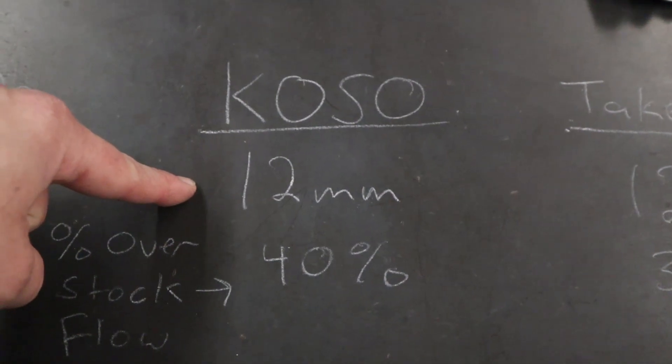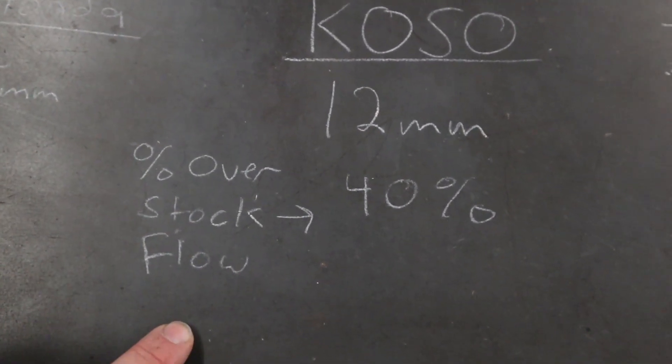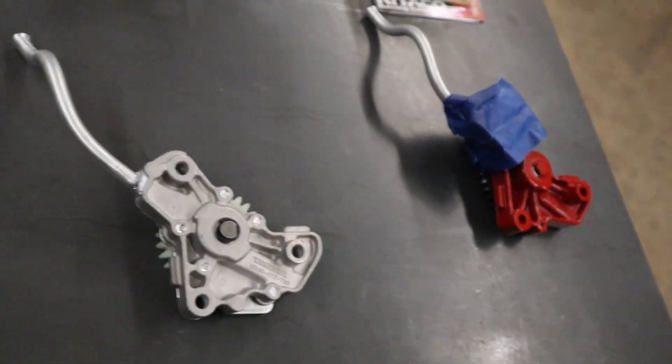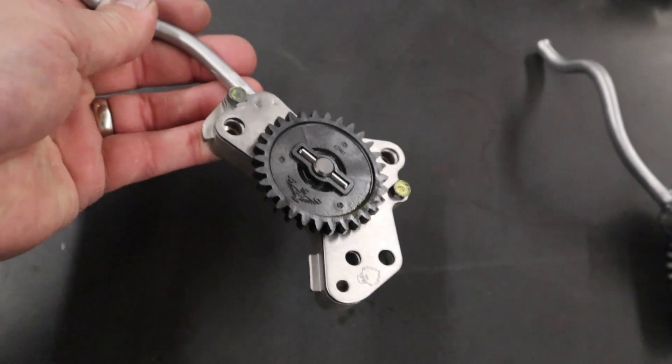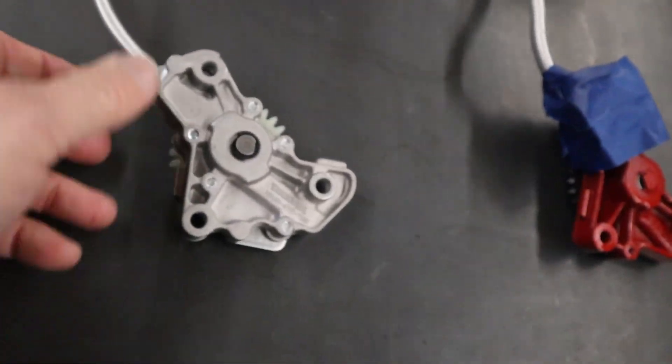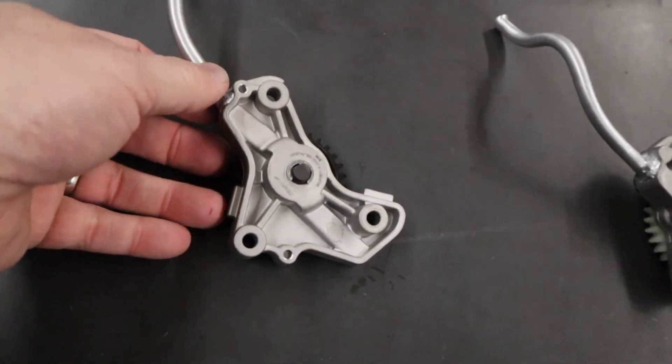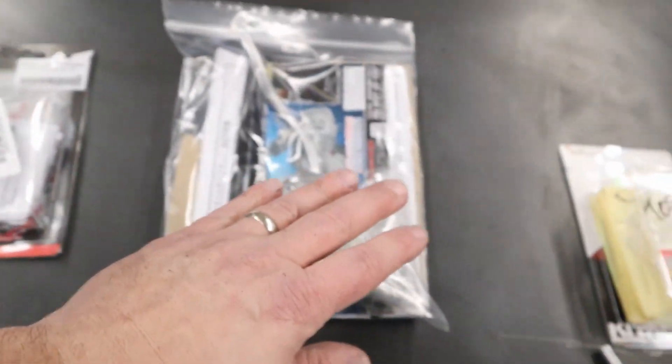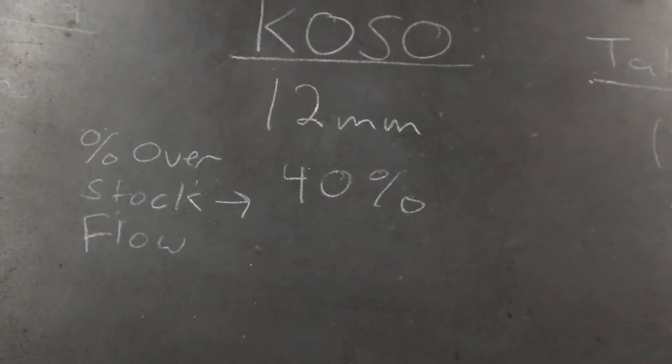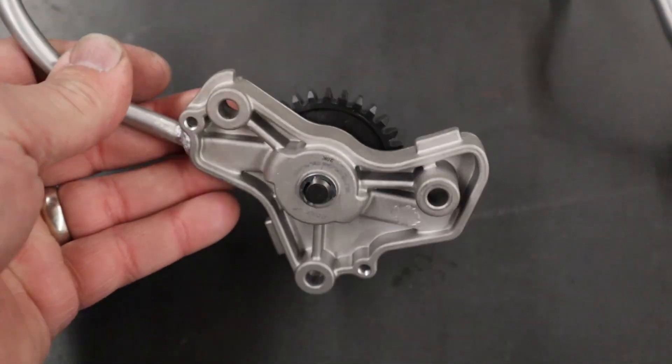The Koso pump is 12 millimeters wide. They claim a 40% increase over stock flow. This is what it looks like. It's basically an OEM pump. Every pump I offer here, all of them are 100% complete and ready to install. None of this 80% bullshit. I buy new pumps so that I can make these complete. You don't need to dick around with using your old parts. Takagawa comes with everything. The Koso doesn't, and the Kotaka doesn't. So I make those complete. I'm looking out for you guys. You also get the original packaging with each of the pumps. What I get, you get. Koso claims 40% over stock. It's basically a stock pump with wider gears in damn near every aspect.